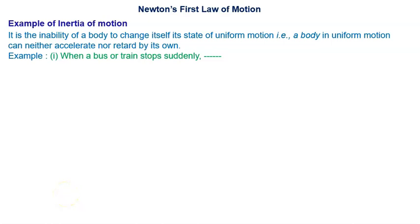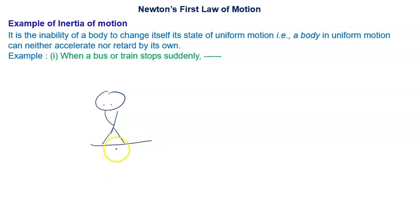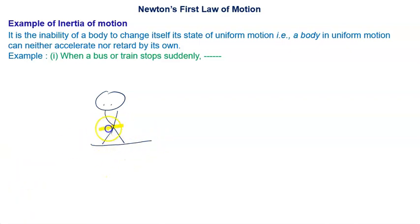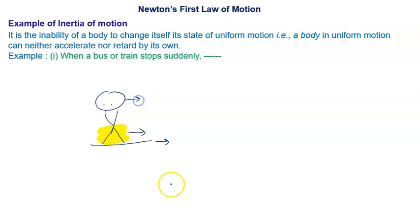Let's look at examples of inertia of motion. When a bus or train stops suddenly, suppose you are standing in a bus — this is the floor of the bus, the shaded part is your lower body and the non-shaded part is your upper body. When the bus is in motion, the floor, lower part, and upper part are all in motion.